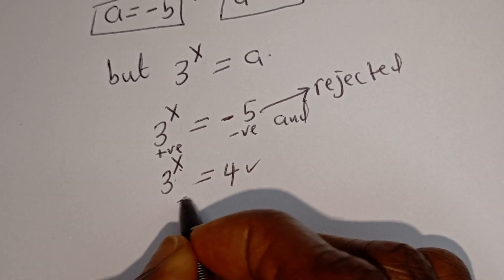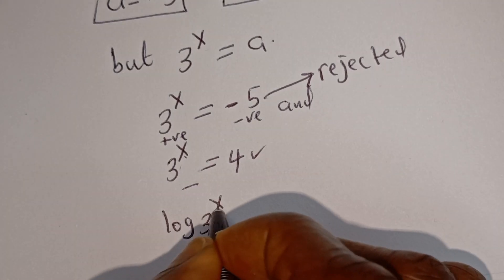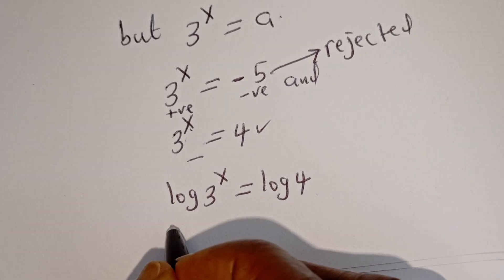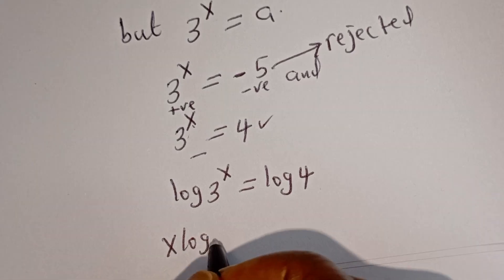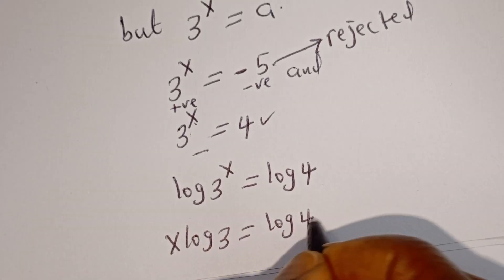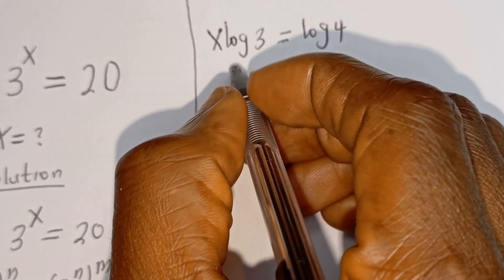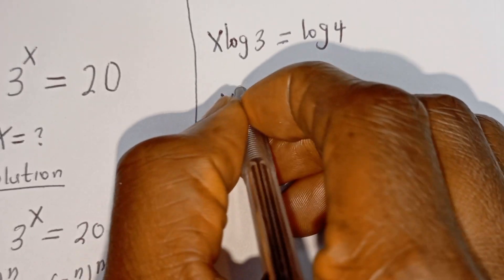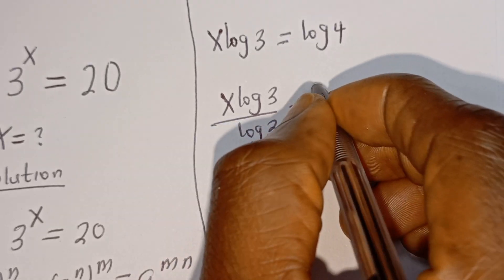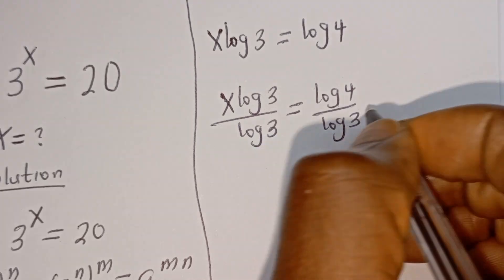Now let's consider this solution. Taking the log of both sides: log of 3 to the power of x equals log 4. Then x times log 3 equals log 4. Since we are looking for x, we divide both sides by log 3, giving x log 3 divided by log 3 equals log 4 divided by log 3.